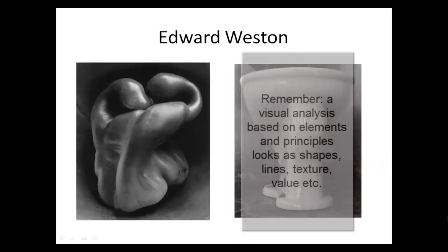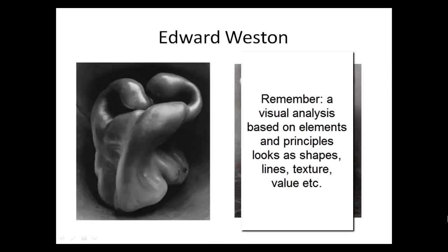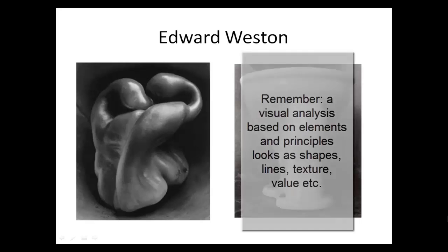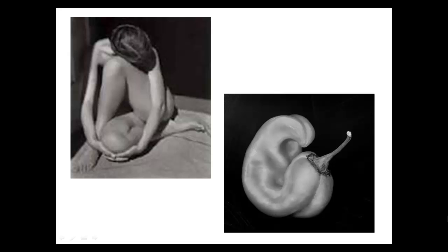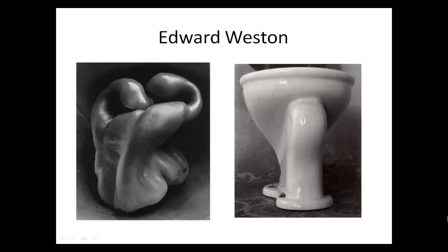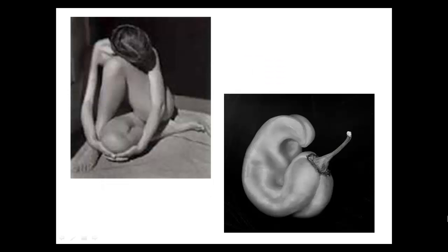Edward Weston looked at his photography in a very different way. For him, it was really much a visual literacy event — he was looking at photography as a visual experience. He would take common things such as peppers, toilets, and the human body, and he would enjoy the sensual curves, the roundness of a toilet bowl, the highlights and shadows in a pepper, just how it curls over on itself. For him, that in itself was worth taking pictures of.